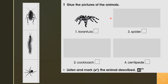Once you have glued the pictures, it says 'listen and mark the animal described.' You will place a tick in the small box. You will listen to the audio describing one of the insects — spider, cockroach, centipede, or tarantula — and you simply mark which animal is being described.